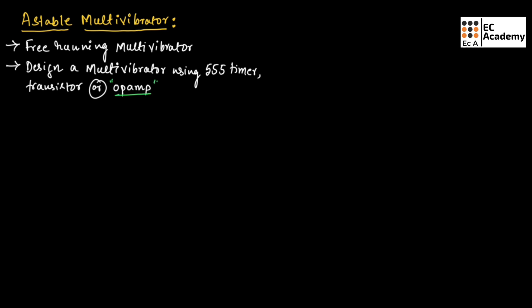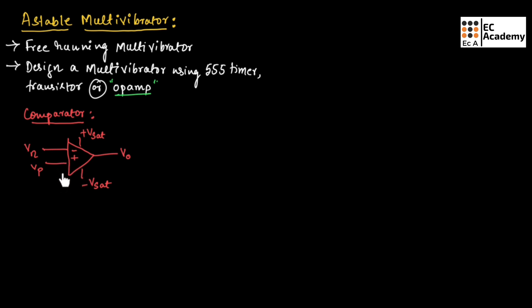Before understanding the working of the astable multivibrator, let us understand a comparator. This figure shows a comparator circuit where we are not using any feedback. Here, V saturation is plus Vcc and minus V saturation is minus VEE, which is the negative terminal voltage. The output of this comparator will be plus V saturation or minus V saturation depending upon the voltage across the negative terminal and positive terminal of the op-amp.